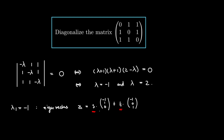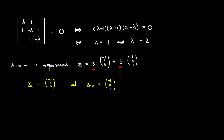Because we have two free variables, we can build two linearly independent vectors from this one eigenvalue. Taking s = 1 and t = 0 gives us x1 = (-1, 1, 0). And taking t = 1 and s = 0, the first part cancels out and we just get x2 = (-1, 0, 1). So we have two eigenvectors corresponding to this one eigenvalue.